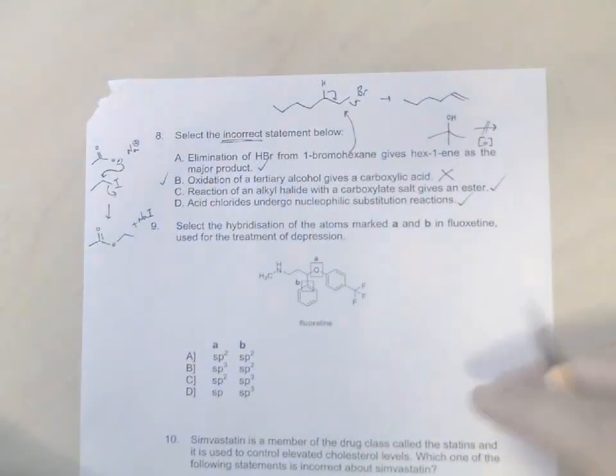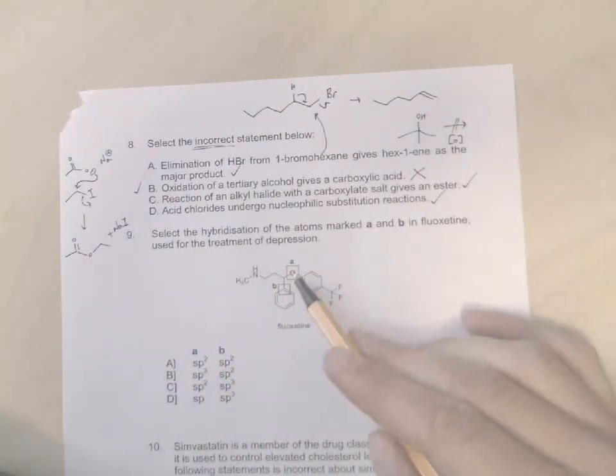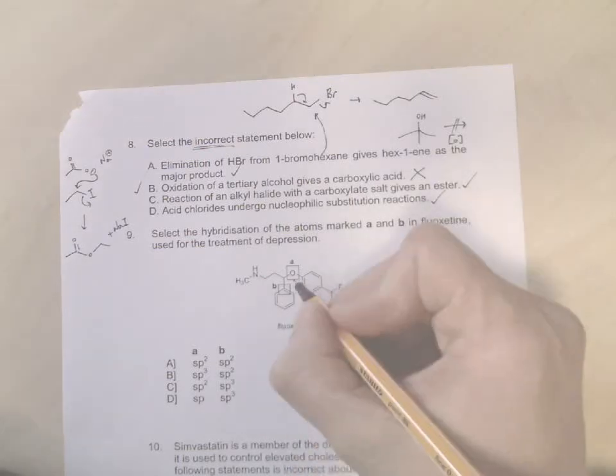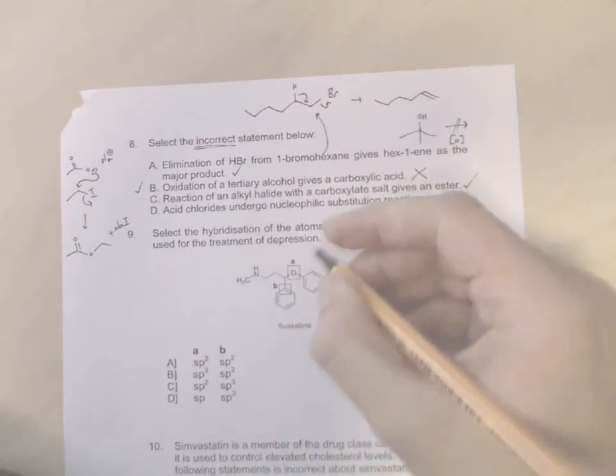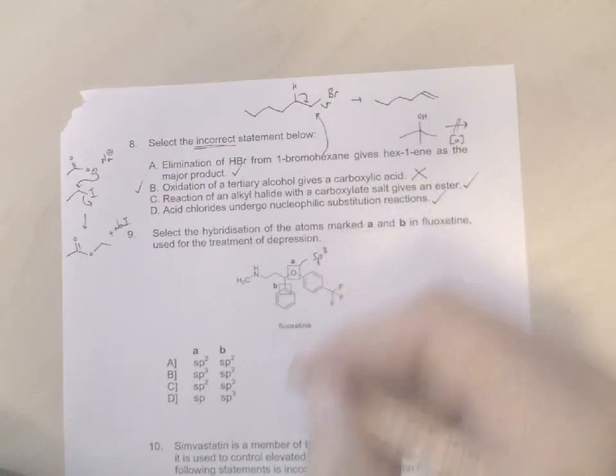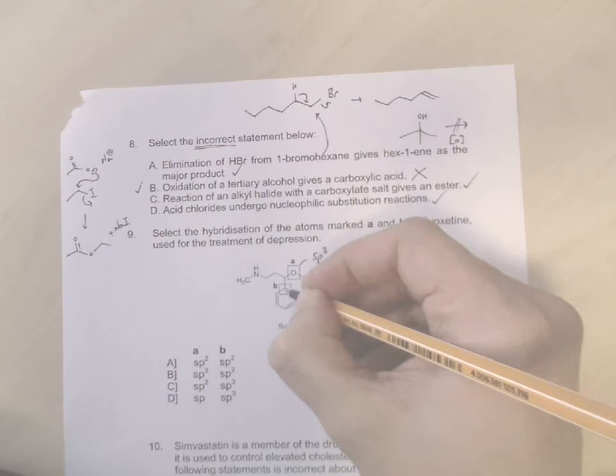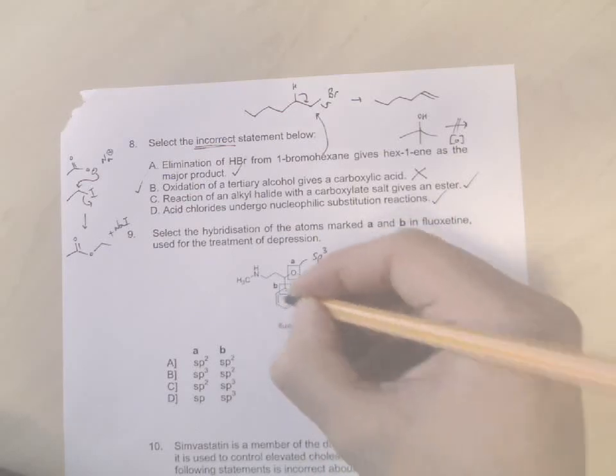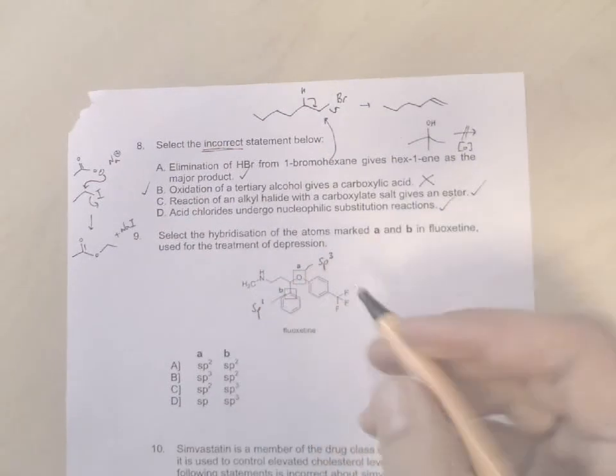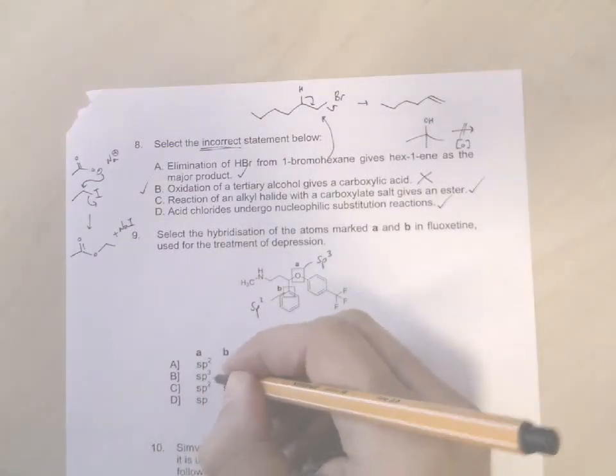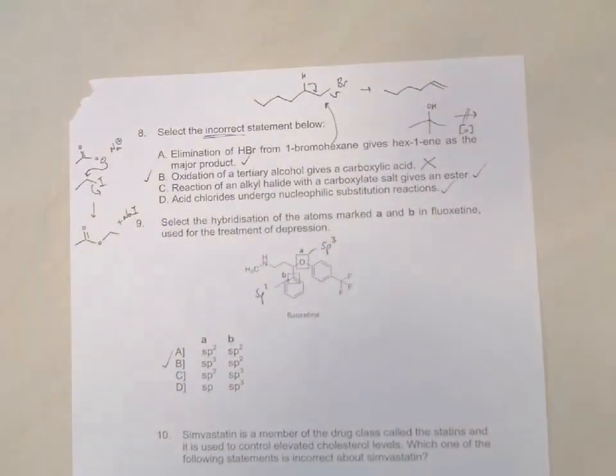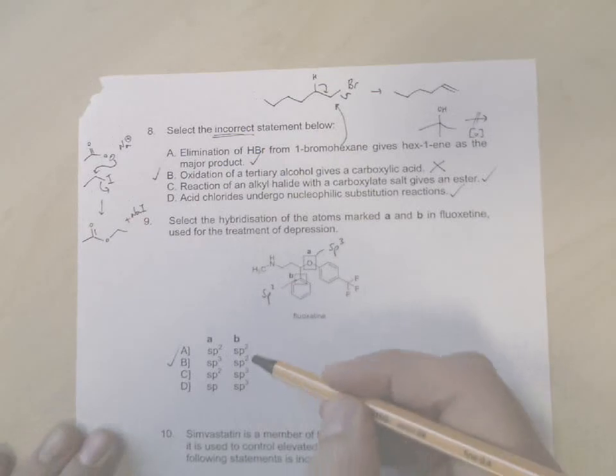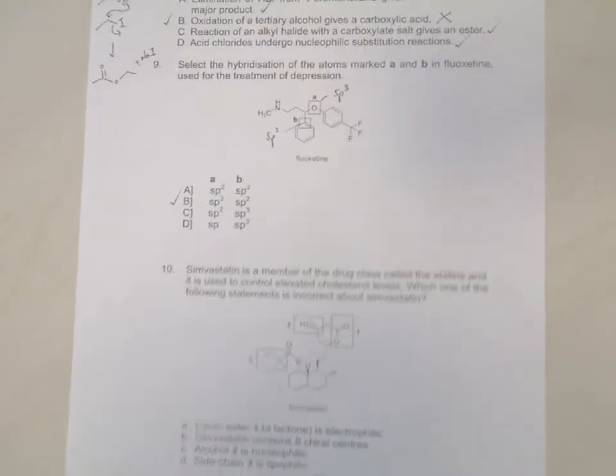Question nine: Hybridization. Okay, select the hybridization of the atoms marked A and B in fluoxetine. Okay, so remember we talked about the types of bonds attached to the atoms. Well, oxygen only has single bonds attached to it, so we can say that is sp3 hybridized. This carbon here is part of a benzene ring which has double bonds, so B is sp2. So we need A is sp3 and B is sp2. So here the answer is B. Okay, but be very careful when you come to eliminate the wrong answers.